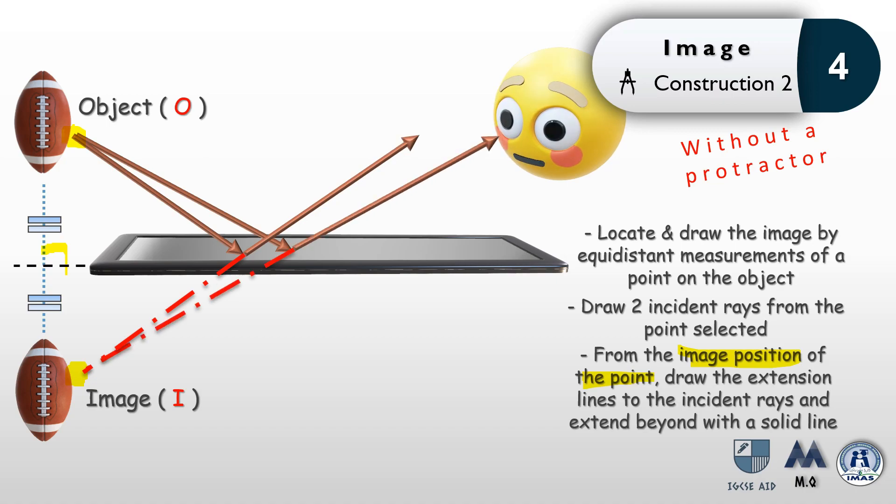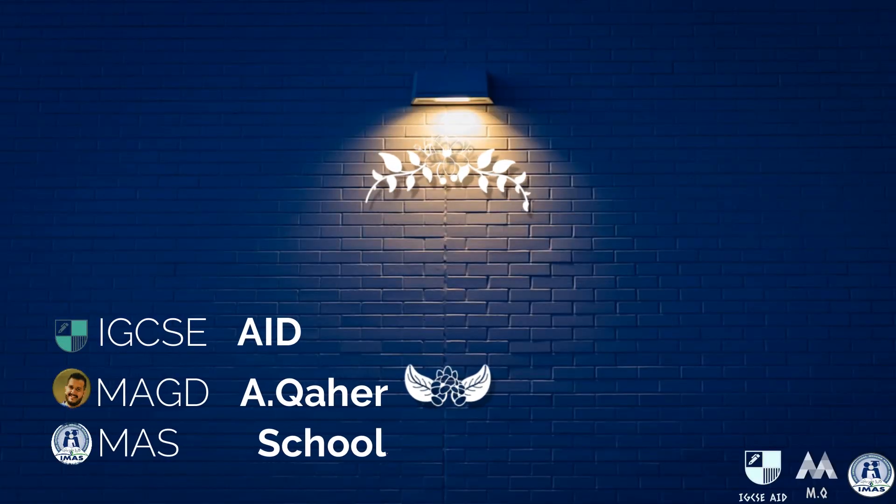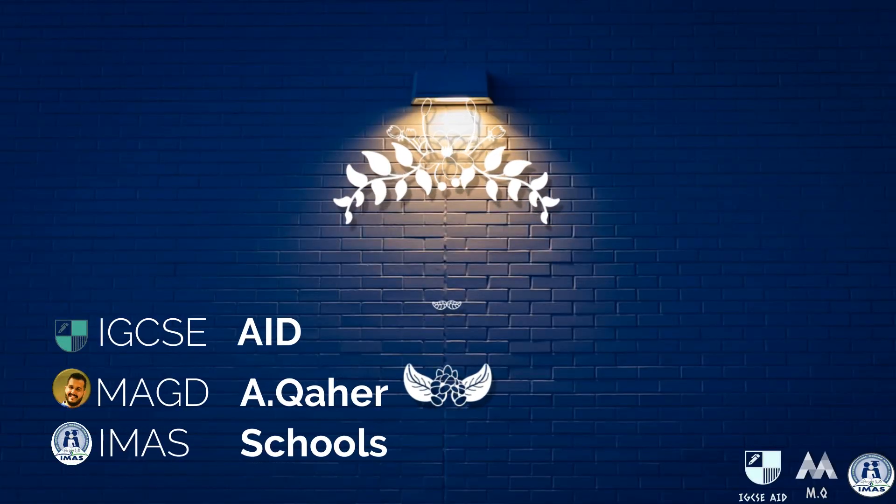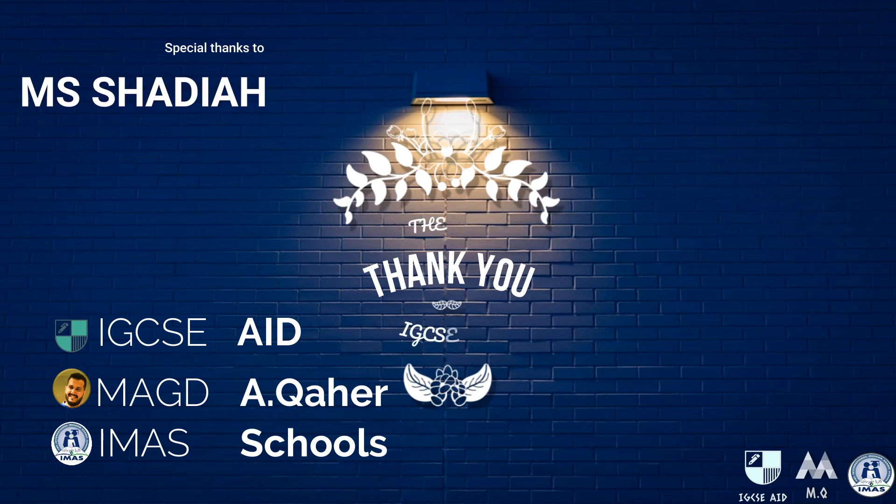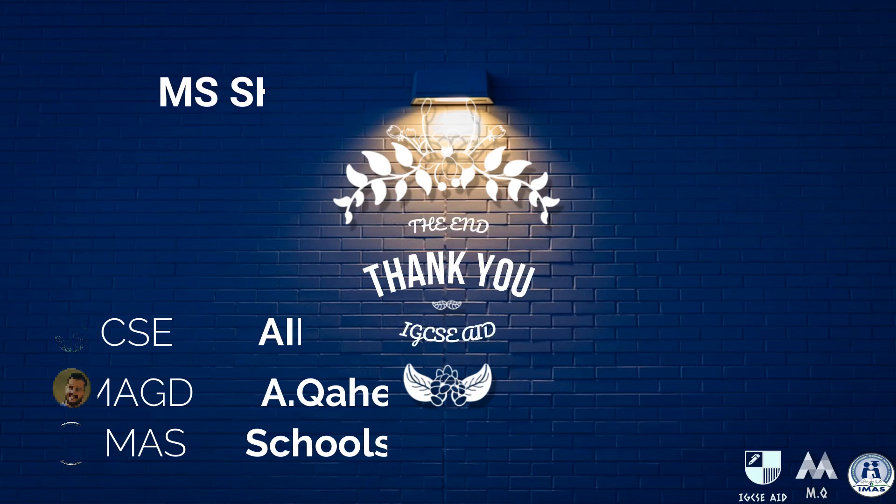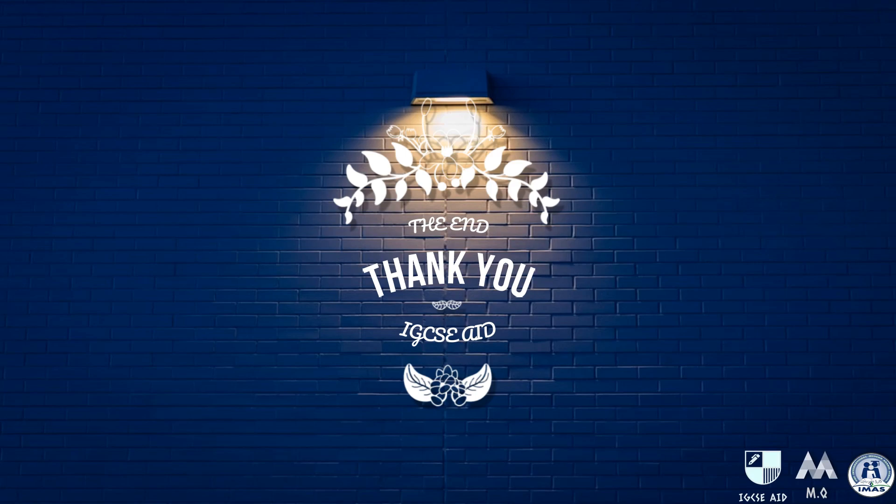Note the rays over here are drawn with dashed lines, and after they hit the incident ray they are drawn with a solid line. Those are the reflected rays without using a protractor. The last method is quite handy when you are doing quizzes and tests. That was the end of our lesson. Thank you so much for listening. I hope you enjoyed every part of it, and see you in the coming lessons.